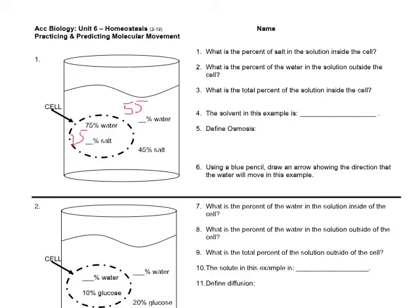The solution outside, the 55 and the 45, is equal to 100, and the solution inside, the 75 and the 25, should equal 100, because there's two different solutions.